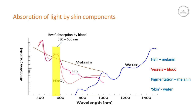So to target the hemoglobin, we typically will use a filter like this — a 530 nanometer filter. This lets through the yellow light, which is strongly absorbed, or preferentially absorbed rather, by the hemoglobin over melanin.